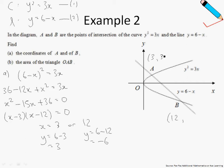So therefore, the coordinates for A is 3, 3, and the coordinates for B will be 12, negative 6.